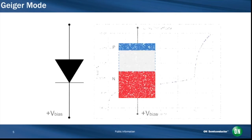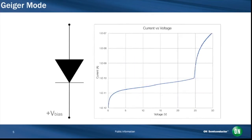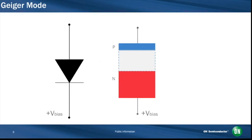If, however, the applied reverse bias is set at a point beyond the breakdown voltage of the diode, then the diode is said to be operating in the Geiger mode, as indicated in the current voltage plot here. When a bias in excess of the breakdown voltage is applied to the diode, an avalanche region may be formed at the PN junction.